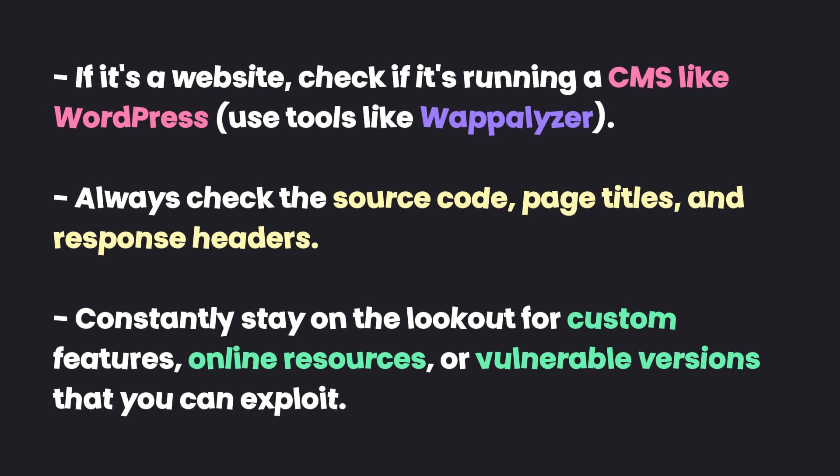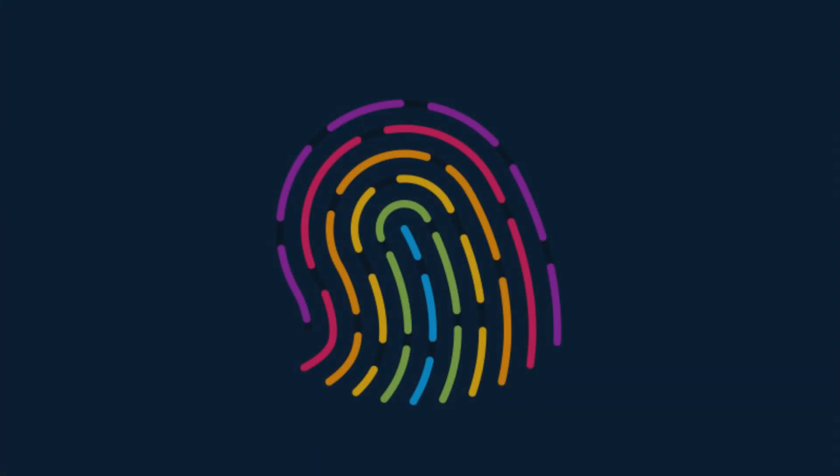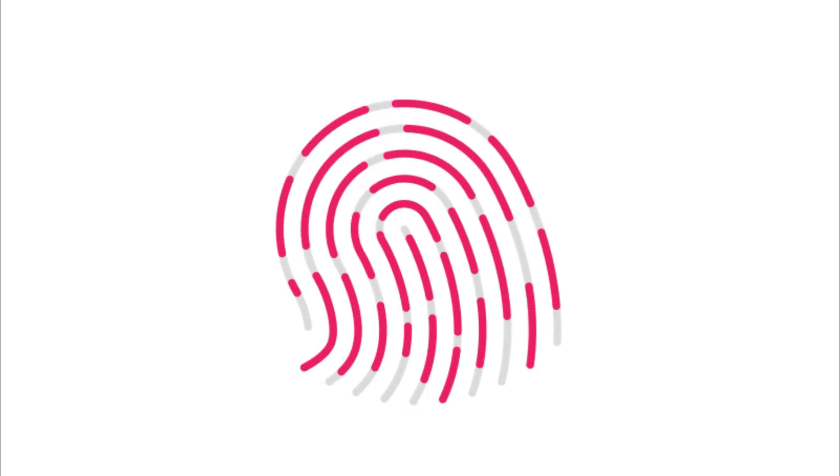You can also check the source code and make sure you check the page titles. Basically, constantly look for: is this something that's custom built? Is this something I can find online? Is this a vulnerable version or not? And which public exploits can I find for a specific version of this particular framework? So that's very very important — constantly be fingerprinting as much as possible and take good notes.